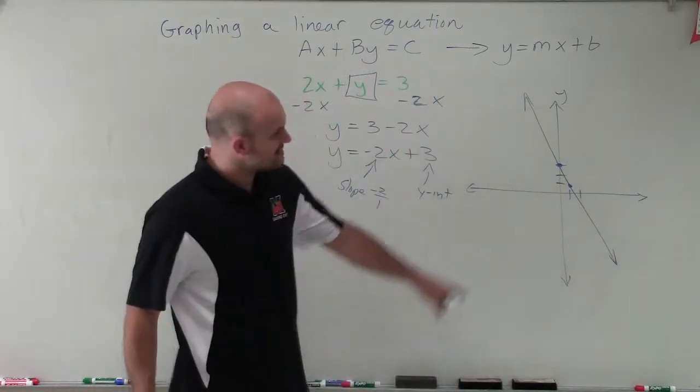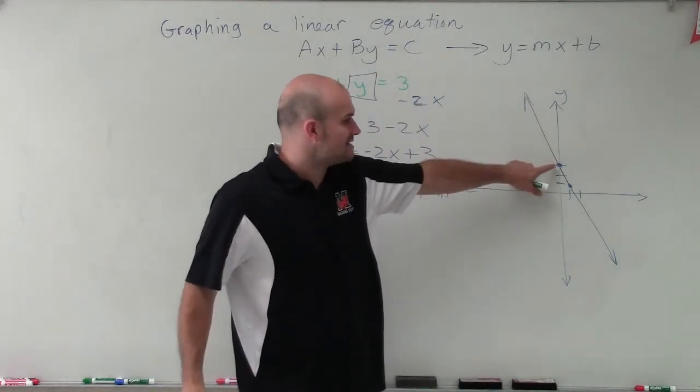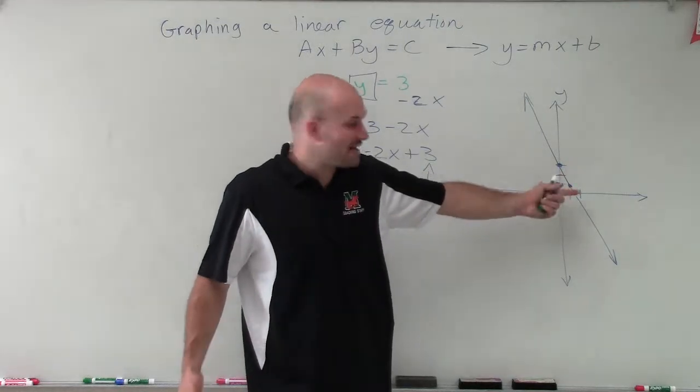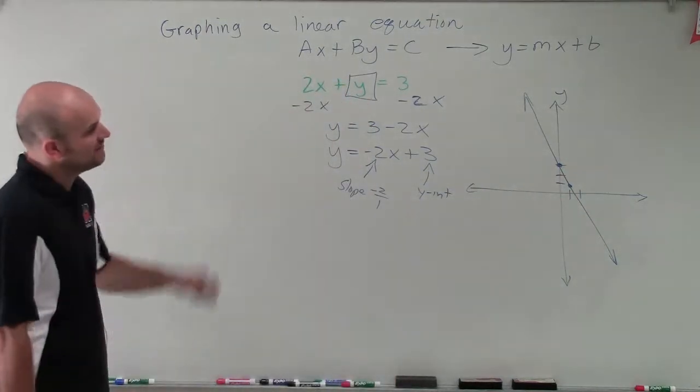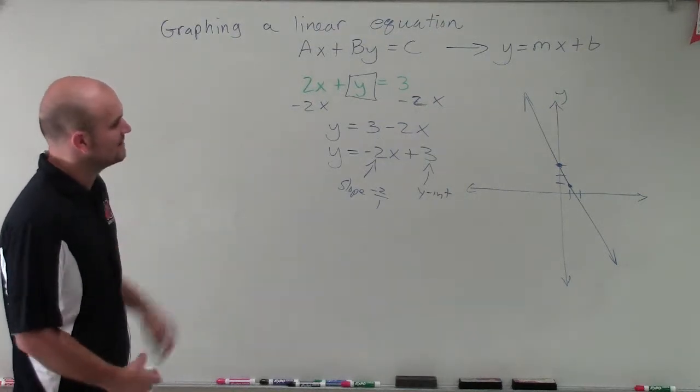And what we notice is we can see that my y-intercept is at 0, 3. My x-intercept we're going to approximate is between 1 and 2. And my graph is going to go infinitely up to the positive and negative direction.